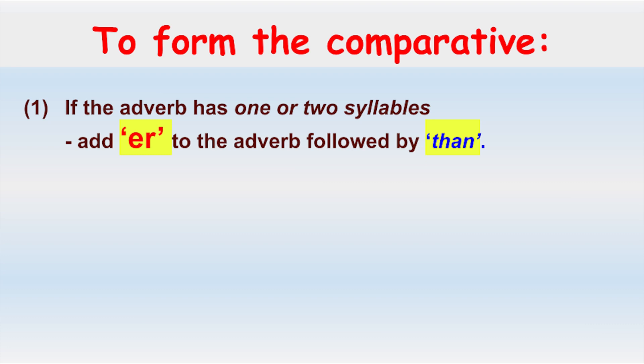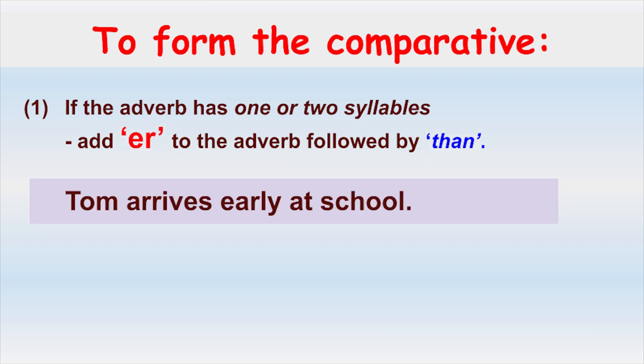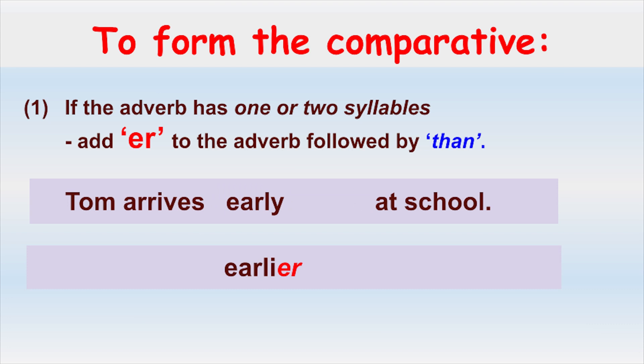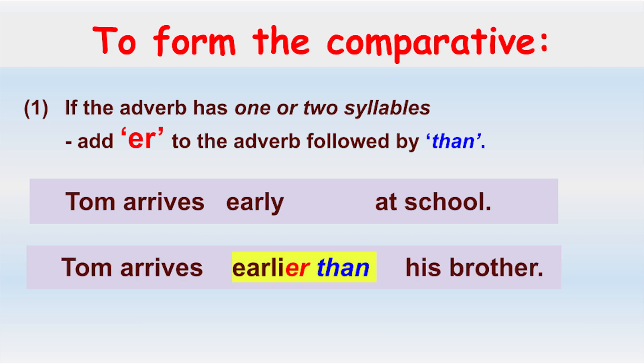Let's look back at our original sentence: Tom arrives early at school. The adverb 'early' is in the positive form. To change it to the comparative form, we add -er to 'early' plus the word 'than.' Our adverb is now a comparative one: 'earlier than.' So our sentence reads: Tom arrives earlier than his brother.